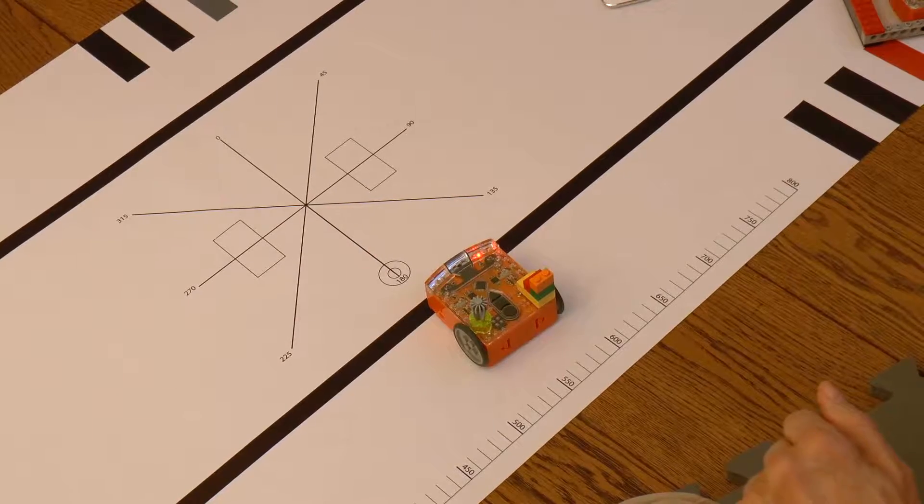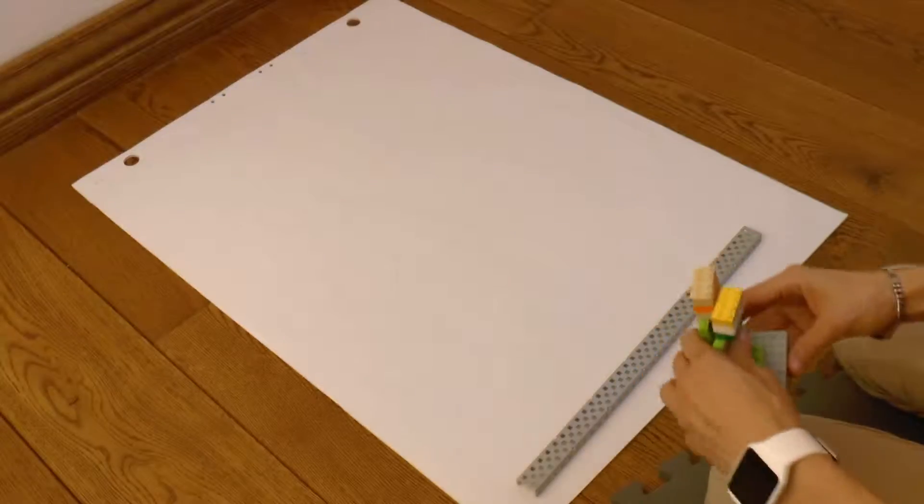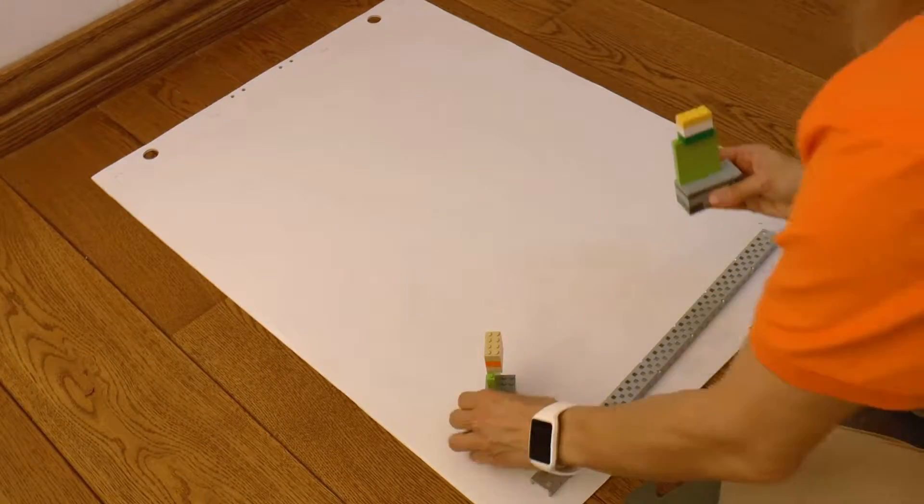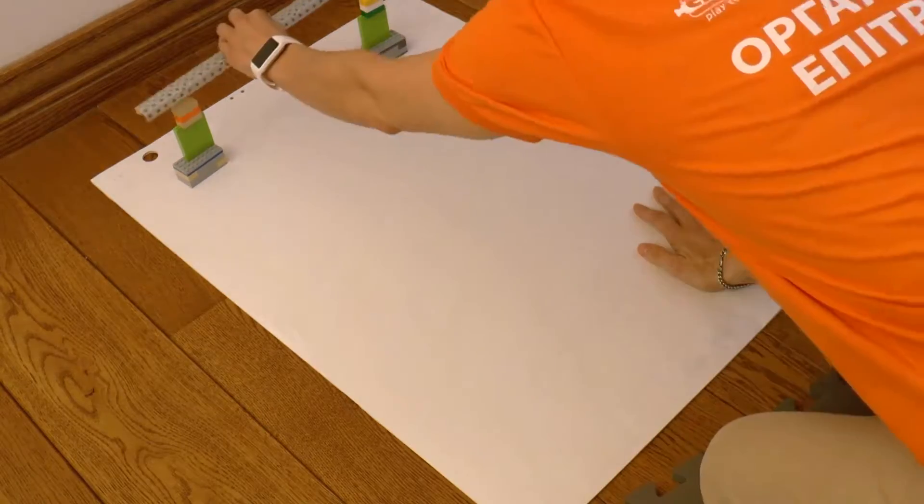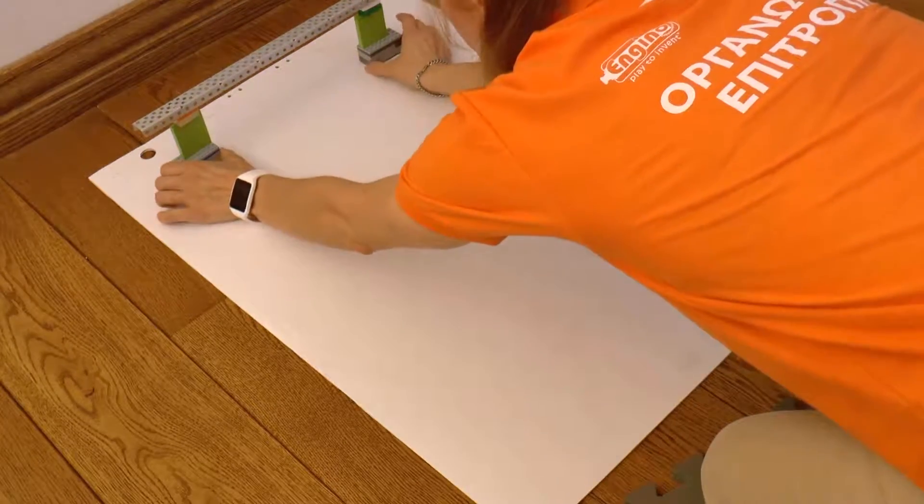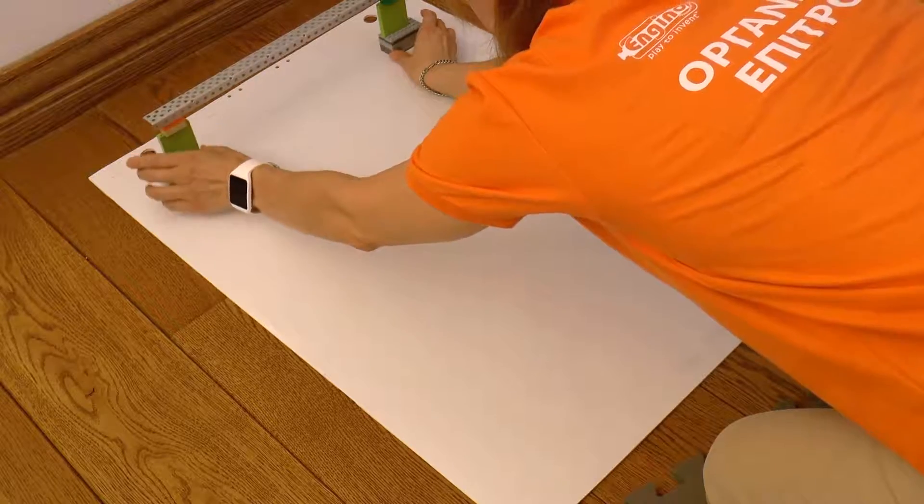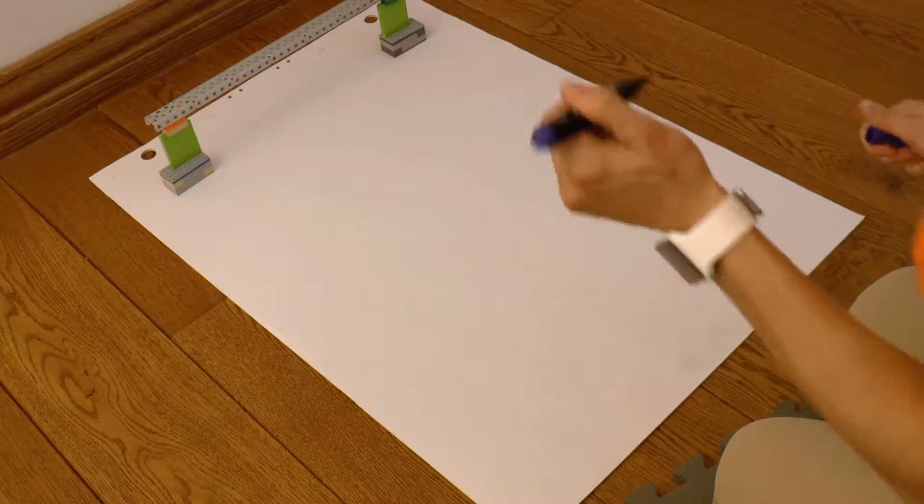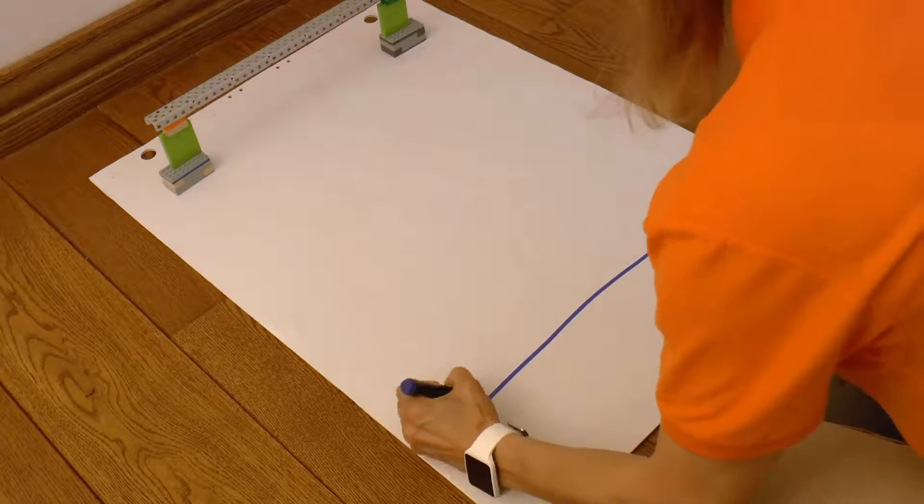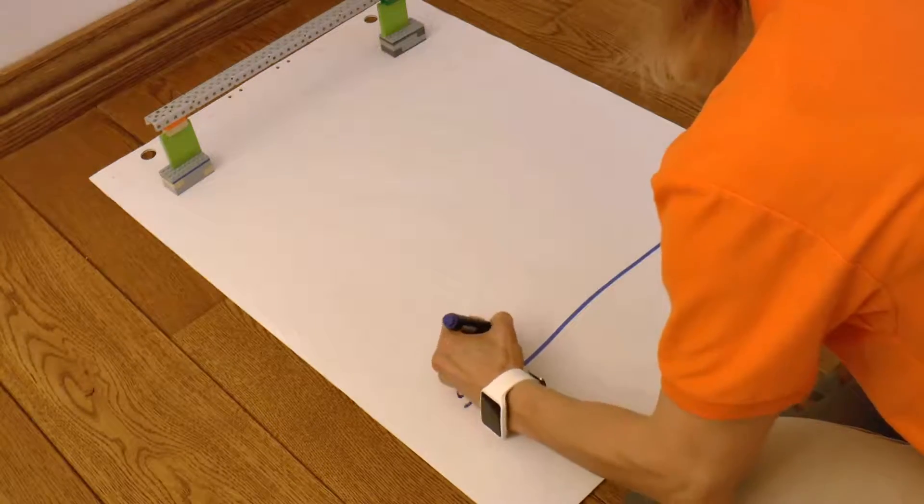The game name is Race. I build a start line and a finish line and a driving track. I have two Edisons here and I equipped them both with the same program. Now, I'll turn on both robots and guide them to the finish line with claps.